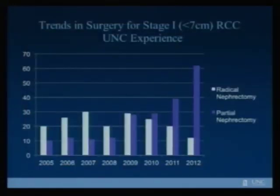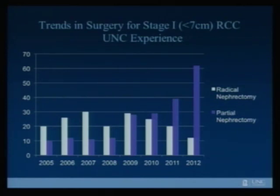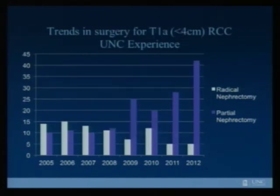At UNC, you can see the uptake of partial nephrectomy over time. For tumors less than 7 cm, the partials are really overtaking radical nephrectomy. It's even more dramatic when you look at true small renal masses under 4 cm, where there's been a dramatic uptick in partial nephrectomy.